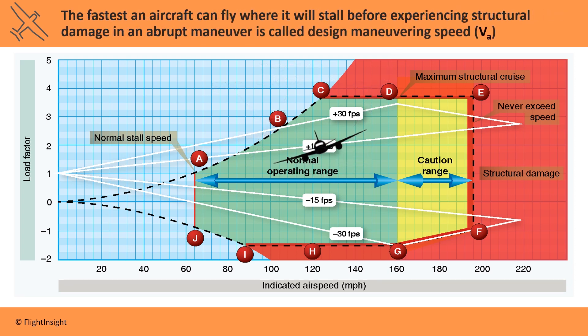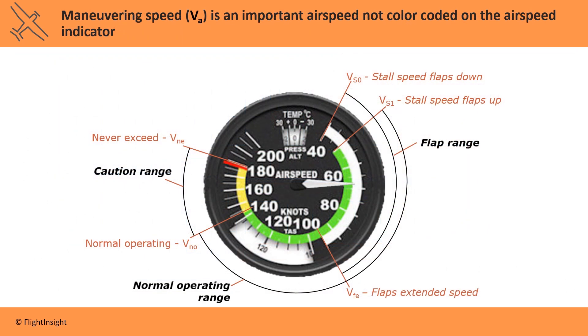Point C, where the red zone starts at the top of the chart, is the fastest the plane can fly where it will stall before experiencing structural damage in an abrupt maneuver. This is called Design Maneuvering Speed, or VA. Out of all the V-speeds, VA is one important one that isn't shown on the airspeed indicator at all. It can be placarded on a cockpit panel, but it won't be indicated by any color coding on the ASI.